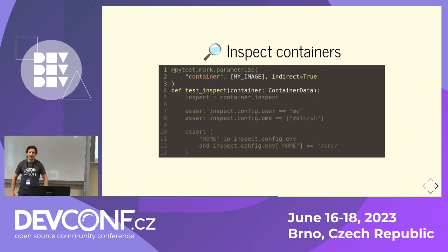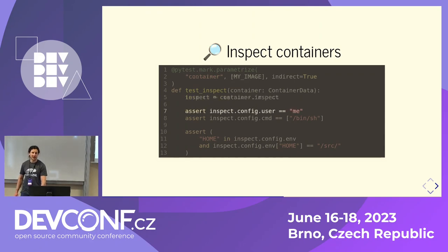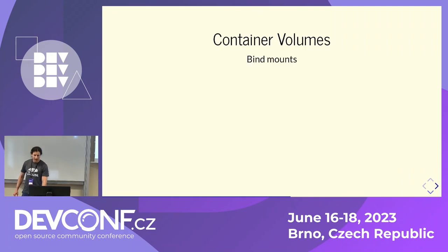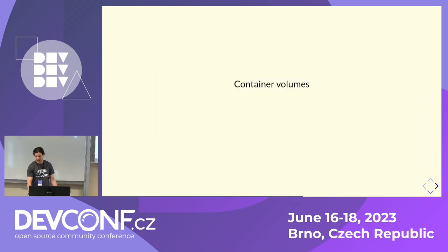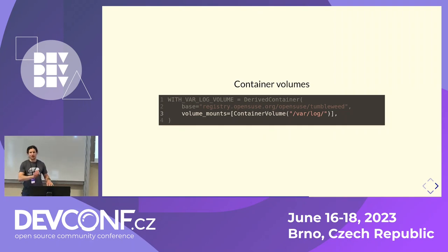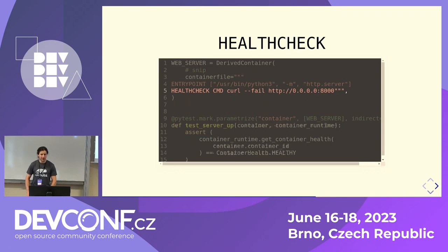If you want some abstraction over podman inspect or docker inspect, there's one for that too. You can just grab the inspect property from the fixture and you'll get a bit of the output that podman inspect would give you — for instance, config and cmd — but not everything, because there's a lot of info and it's definitely not stable over releases. You can create bind mounts — again very creatively called just bind_mount — which can be occasionally useful if you want to bind a specific directory. You can also bind specific container volumes.